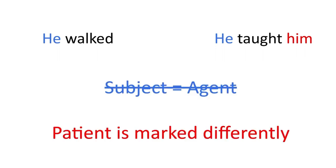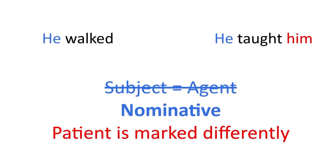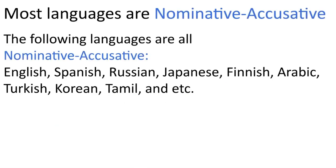In linguistics, this subject-agent case is called the nominative, while this patient case is called the accusative. This is called nominative-accusative alignment and is found in the vast majority of languages in the world. English, Spanish, Russian, Arabic, Japanese, Korean, Tamil, Turkish, Finnish, and German all display this form of alignment.